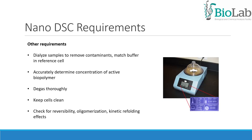For a successful experiment, you should dialyze samples to remove contaminants, match the buffer in the reference cell, accurately determine the concentration of active biopolymer, degas thoroughly, keep cells clean and check for reversibility, oligomerization and kinetic refolding effects.